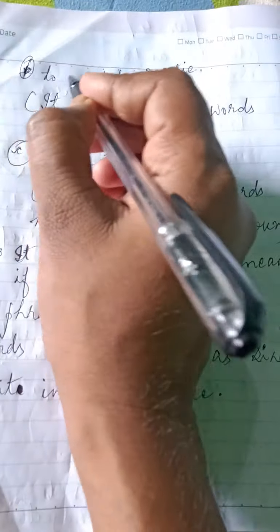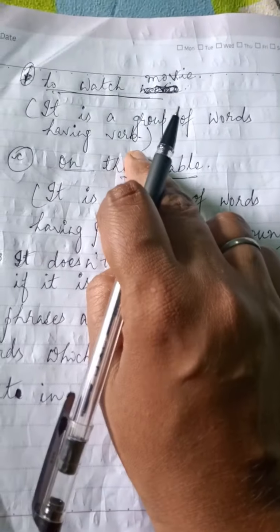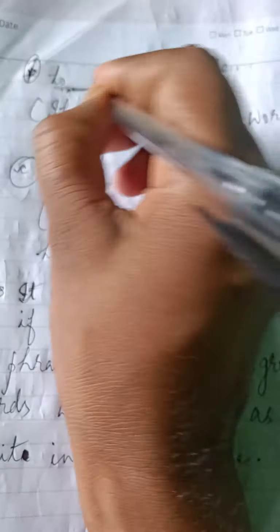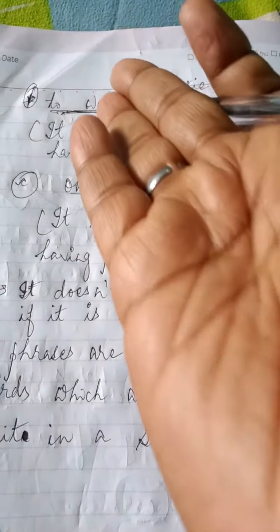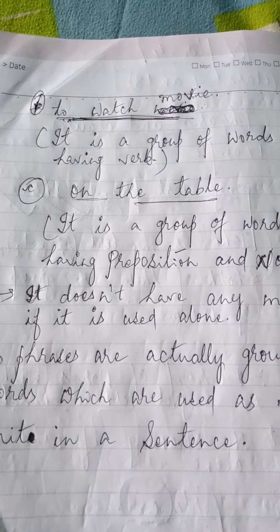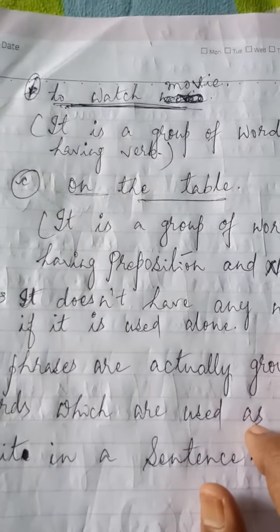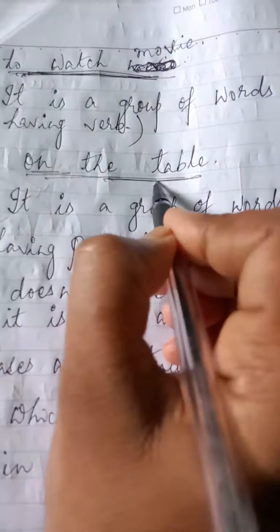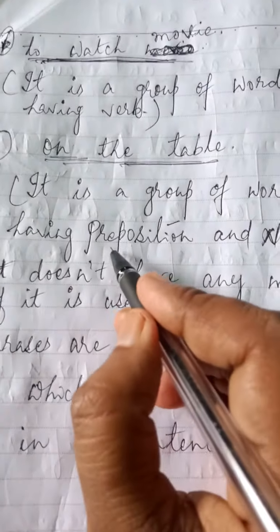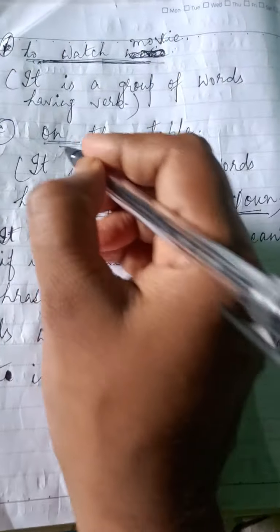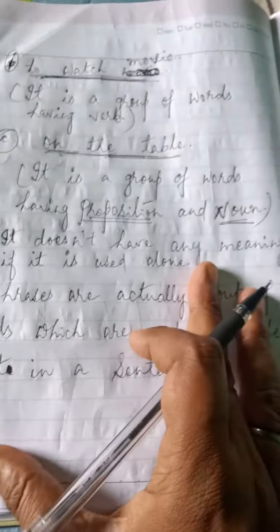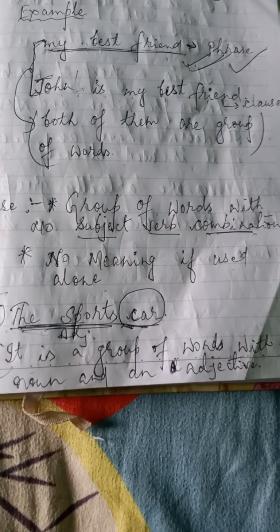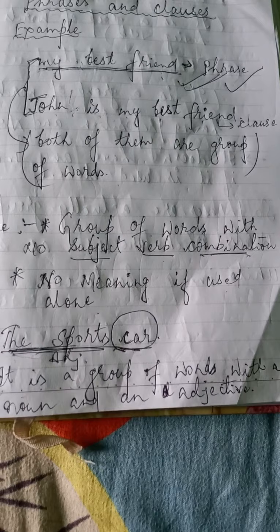More examples: 'to watch movie' is a group of words having verbs, but again there is no subject-verb combination and no meaning if used alone. 'On the table' is a group of words having a preposition and a noun — again no subject-verb combination. So a phrase is a group of words with no subject-verb combination and no meaning if used alone.